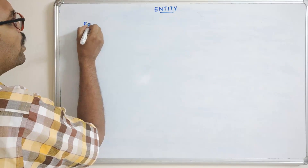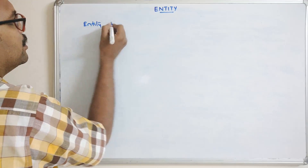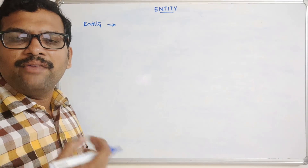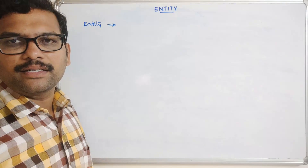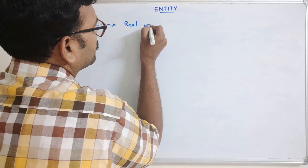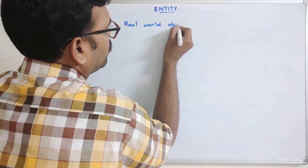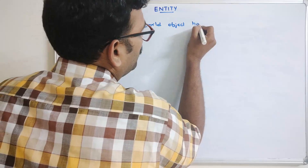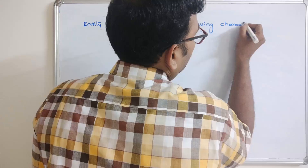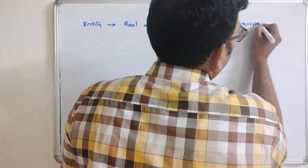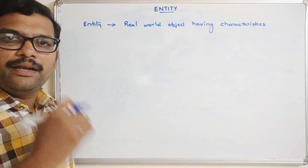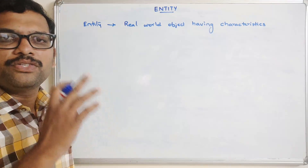So the first one is: what is an entity? An entity is a real world object which has some properties or characteristics. So the entity can be identified and it can have properties or characteristics.